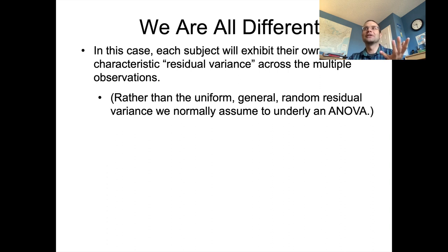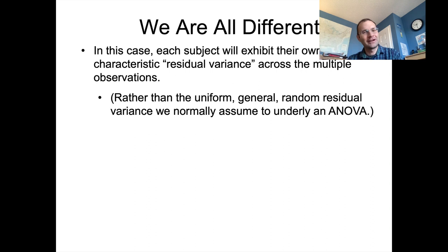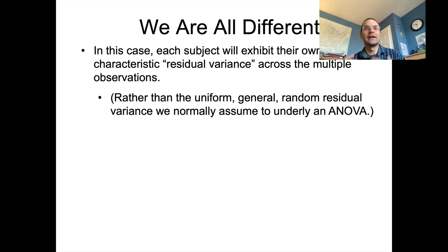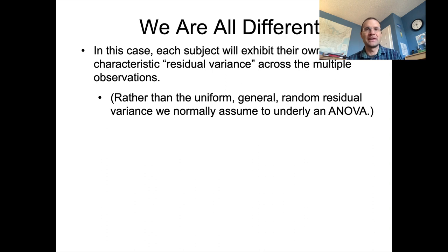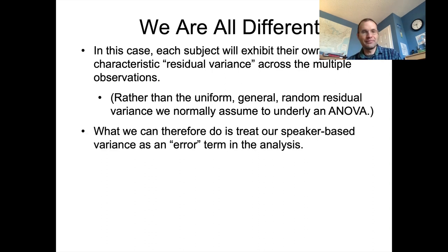Part of the assumption of repeated measures ANOVA is that different subjects are going to have their own characteristic variance. If they do, you can use that to predict the overall underlying residual variance in your analysis. What used to be completely random residual variance has a little less randomness because we're attributing some of that variance to differences between speakers. What we're actually doing mathematically is treating that speaker-based variance as an error term in the analysis. The errors in our predictions are not simply based on randomness overall — they're based on whoever is speaking.